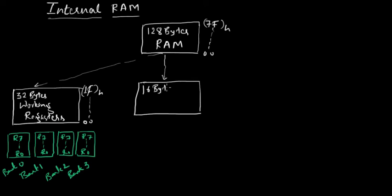The second classification of memory is 16 bytes of bit addressable. This is 16 bytes starting from 0x20 to 0x2F, and these are called bit addressable.